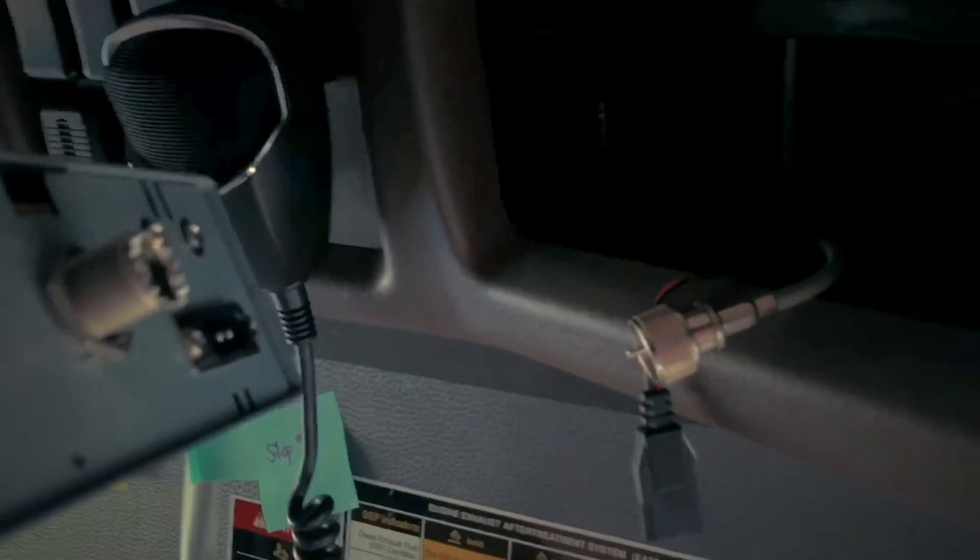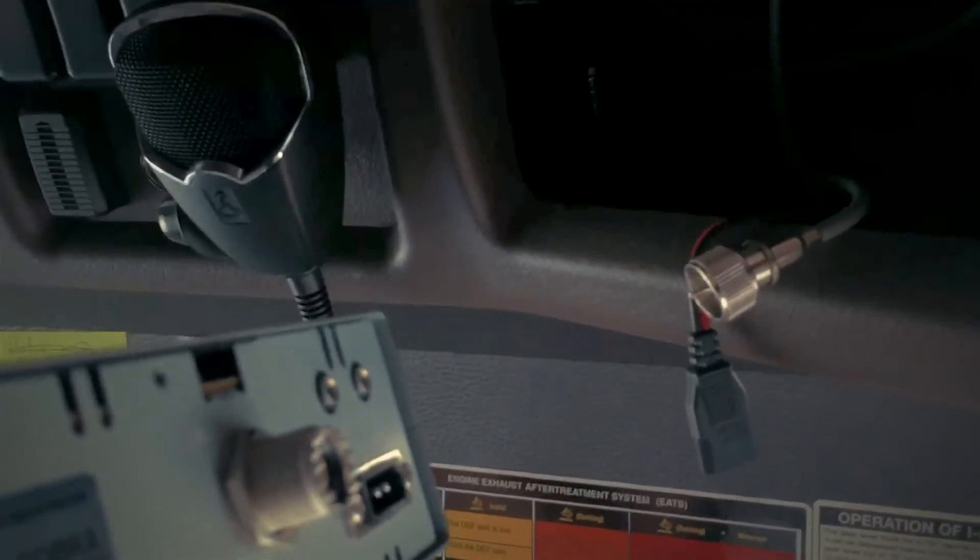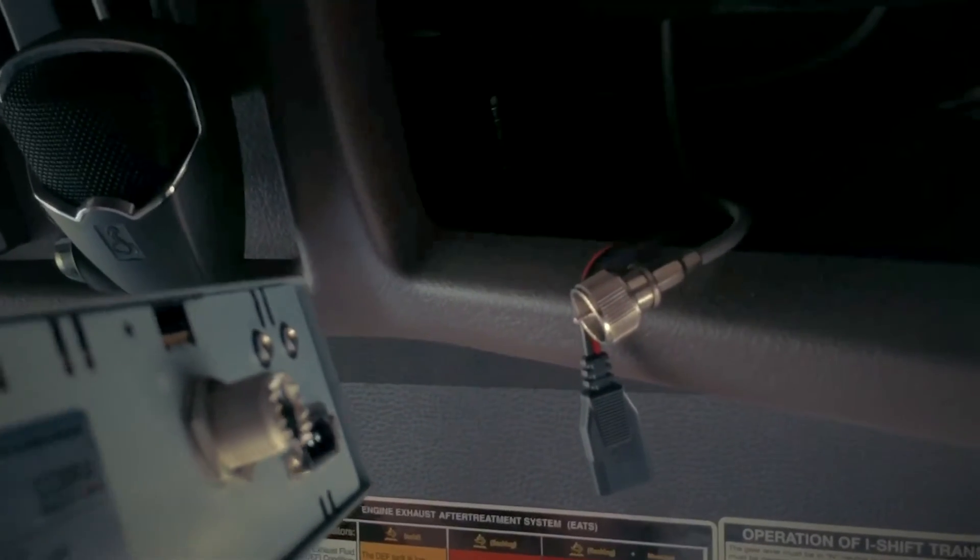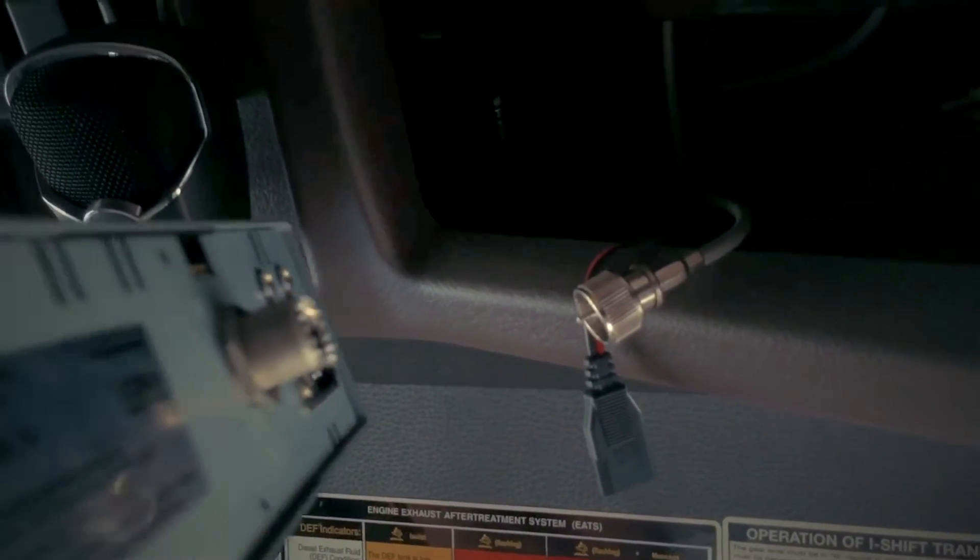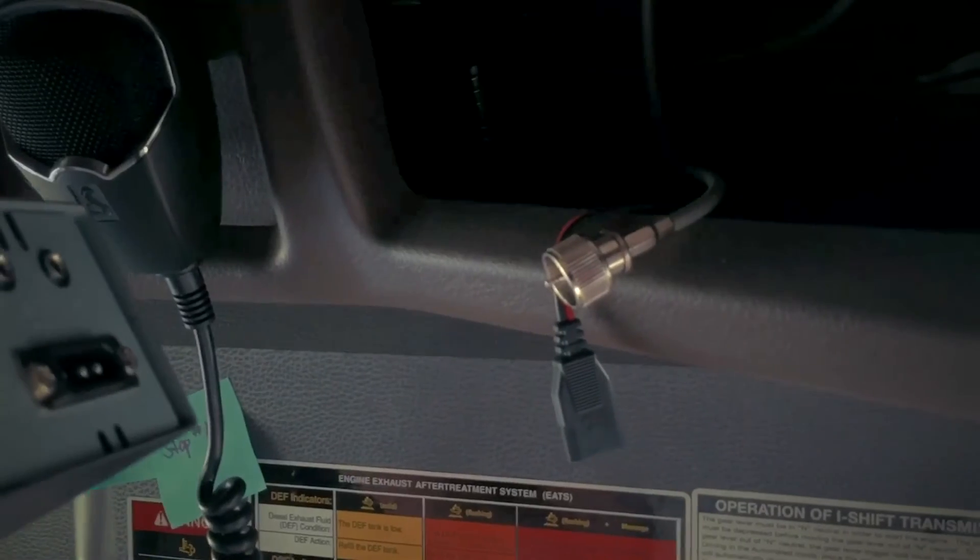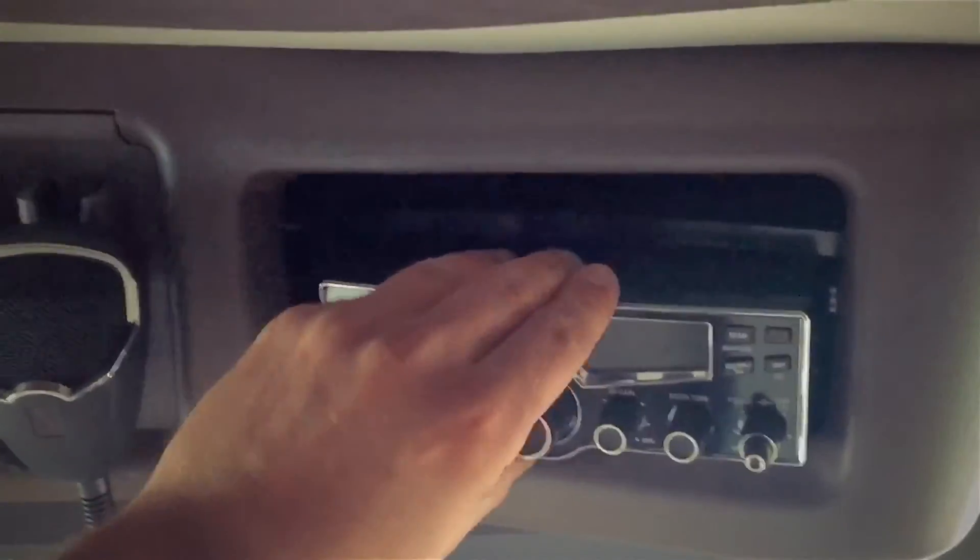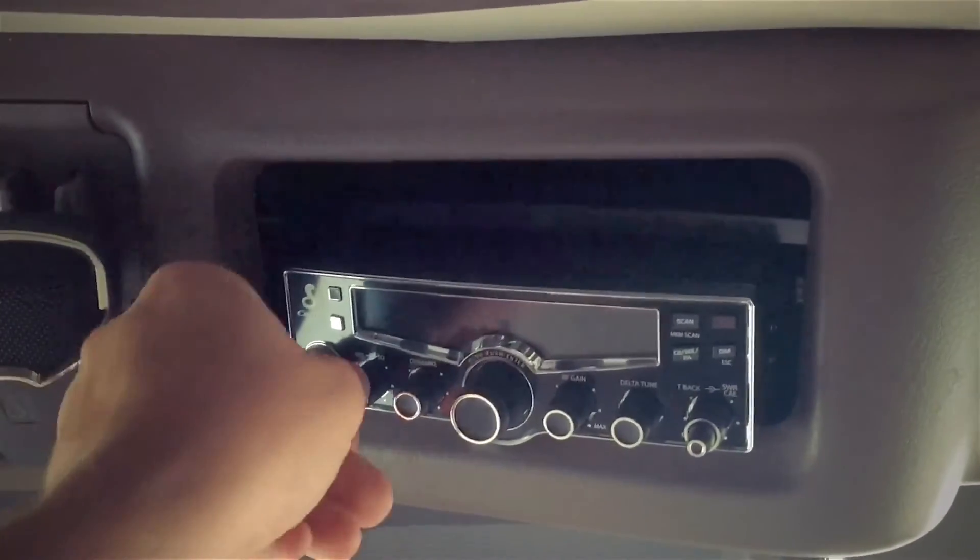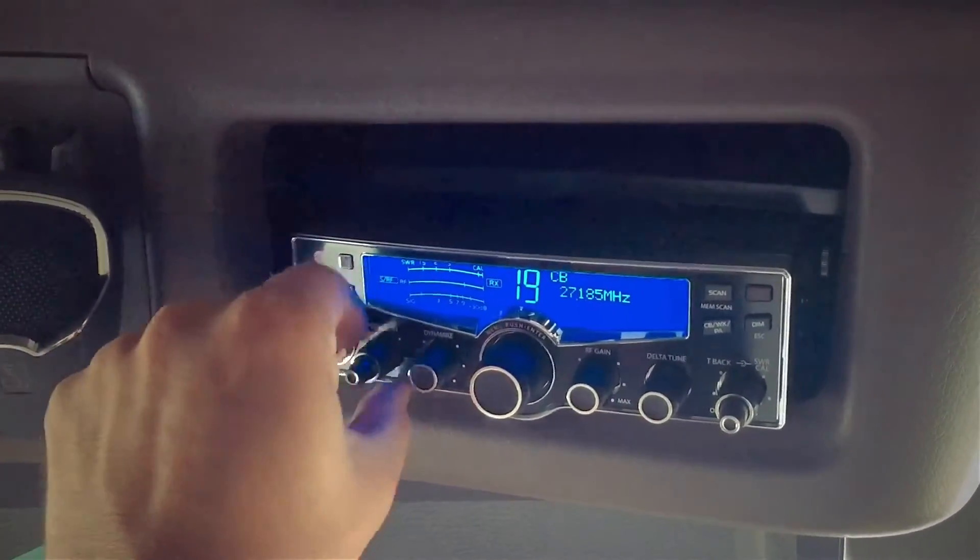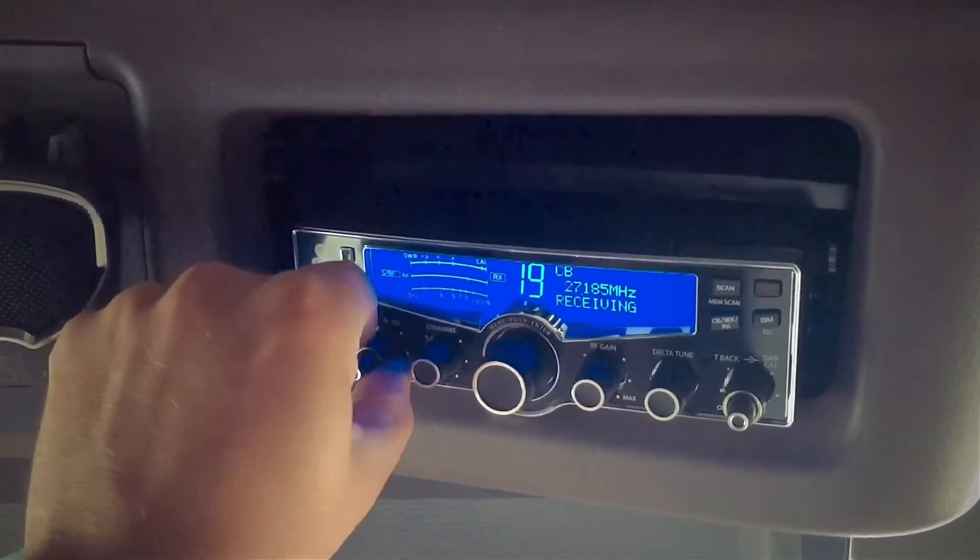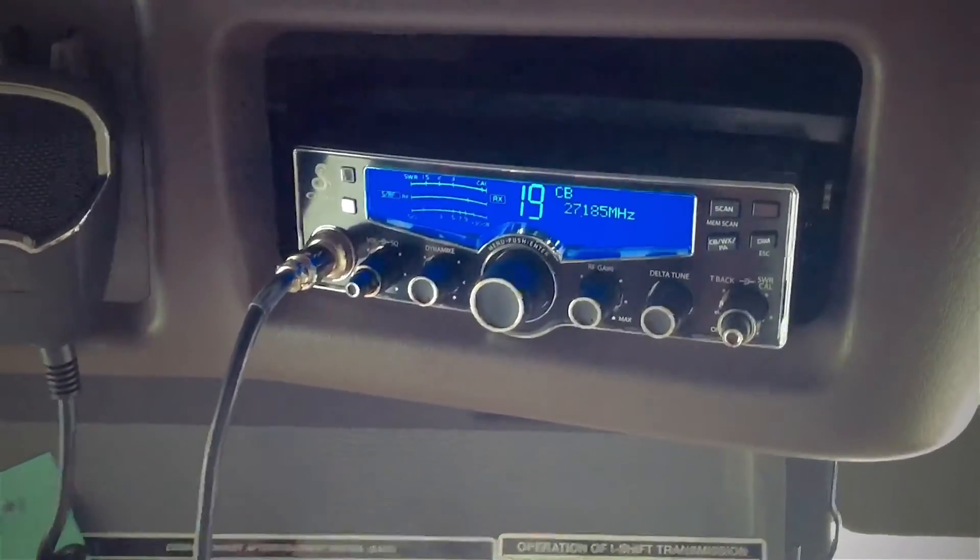So we're gonna hook the radio back up. Remember when you're hooking up the radio, do not power the radio on without the antenna being hooked up. So you want to hook up the antenna, hook up the power, slide it back in there and hook up your microphone, and then power it on. So I have it hooked up, slid it in there. Let's test it out. I'm gonna turn it on and voila. Display is working just fine.